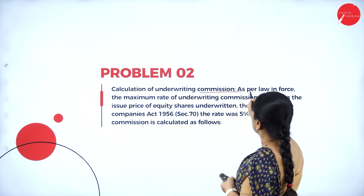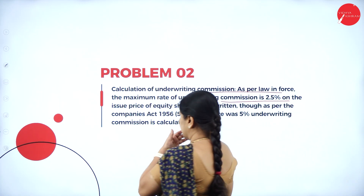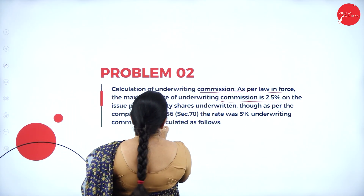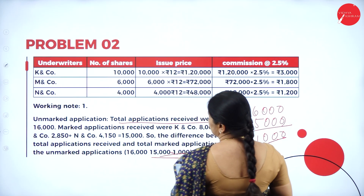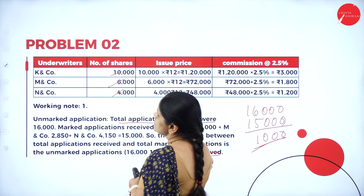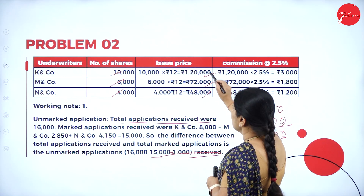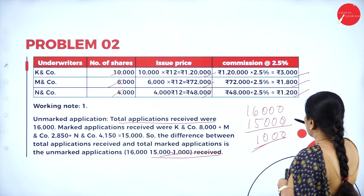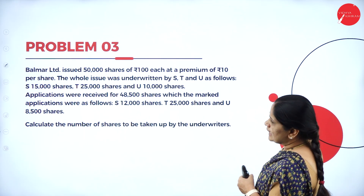Now we have to calculate the underwriters' commission. The maximum rate of underwriters' commission is 2.5% on the issue price of equity shares underwritten. As per the Companies Act 1956, the rate was 5%. Number of shares underwritten: 10,000, 6,000 and 4,000. Multiplying by the issue price of rupees 12 and applying 2.5%, we get underwriting commission of 3,000, 1,800 and 1,200.